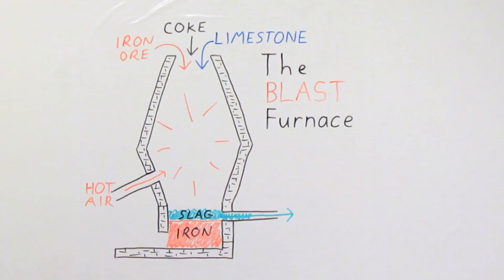The slag can be drawn off the top of the iron and then the pure iron can be poured right out at the bottom of the blast furnace.